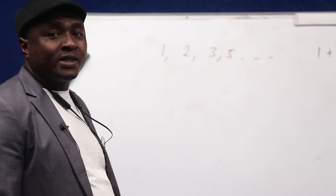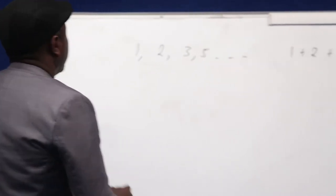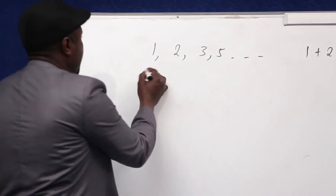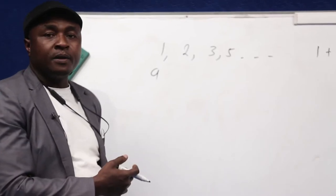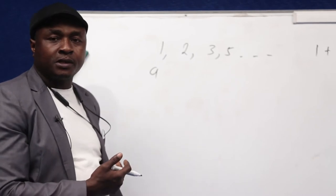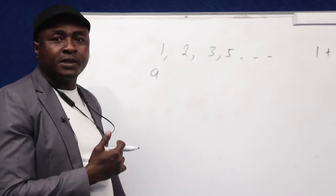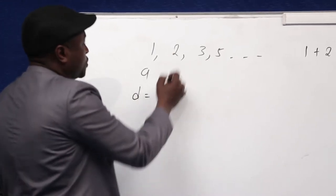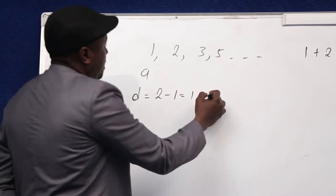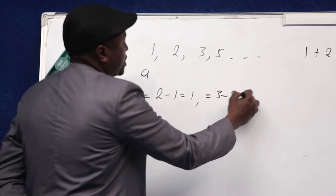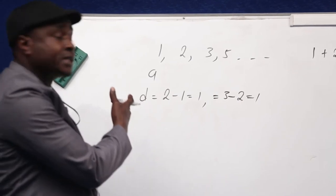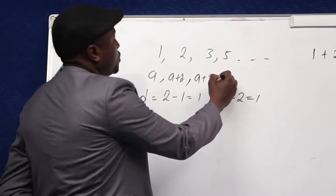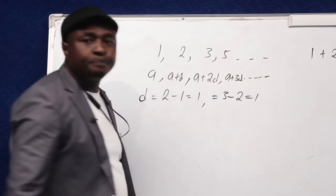If the sequence or series is arithmetic progression, that is AP, the first term — as in the case of this illustration — is 1, which is termed as A. The next term should be the first term plus the common difference. The common difference is simply the second term minus the first term, or the third term minus the second term. In this case, the common difference is 2 minus 1, which is 1, and equivalently 3 minus 2, which is also 1. Thus, the second term is A plus D, the third term is A plus 2D, then A plus 3D, and so on.